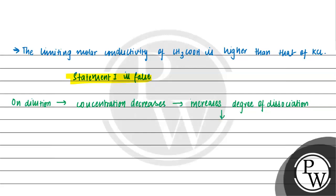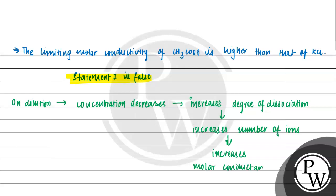On dilution, the degree of dissociation increases. This means that the number of ions will increase. If we increase the number of ions, then our molar conductivity will increase. So, the statement was saying that molar conductivity decreases with decrease in concentration, but we see that when concentration decreases, molar conductivity actually increases. On decrease in concentration, molar conductivity increases.